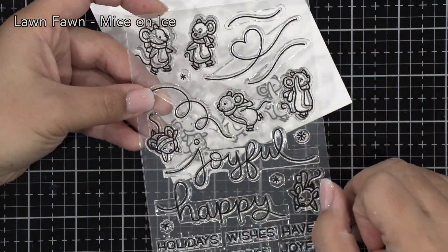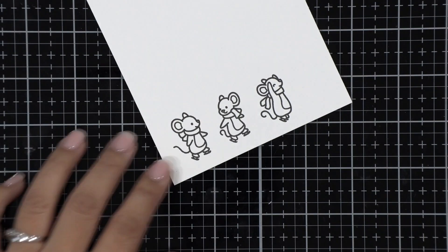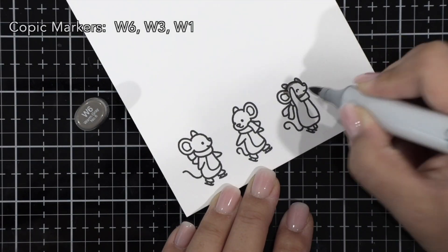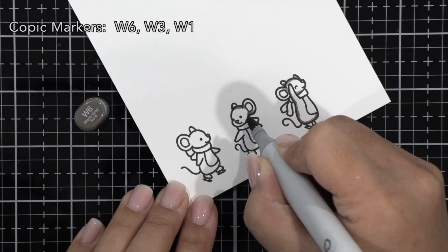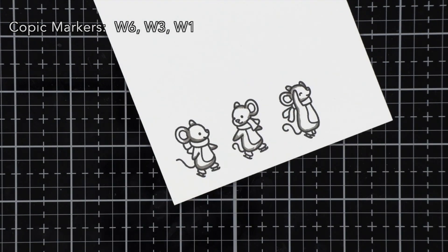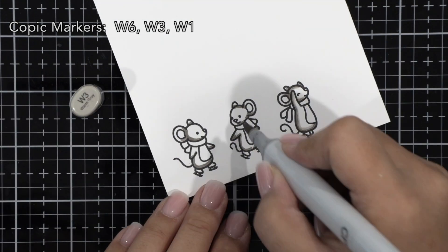To start, I've stamped out a few images from the Mice on Ice stamp set. This stamp set is full of adorable skating mice with lots of holiday sentiments, and there are dies that also cut out those large sentiments, and we'll be using the Joyful one later.